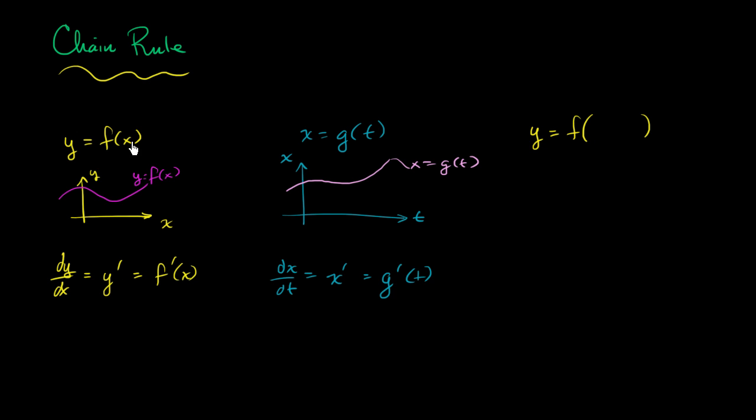So y is a function of x, but x itself is g of t. So instead of an x in here, we're going to write g of t. And so how do we take a derivative of this? Well, the chain rule tells us that dy dt, the rate at which y will change with respect to t,